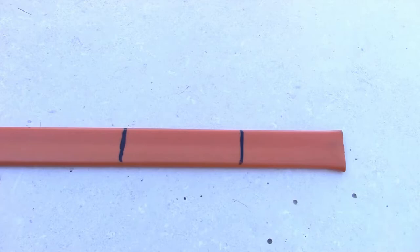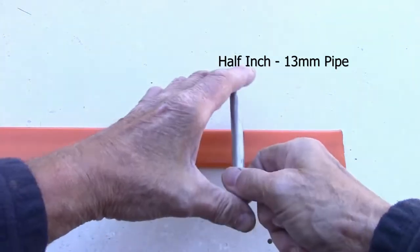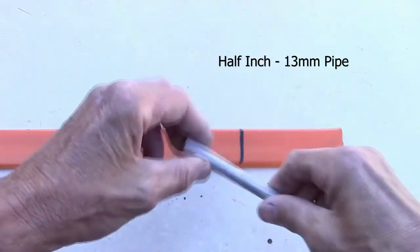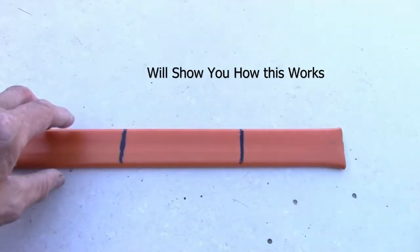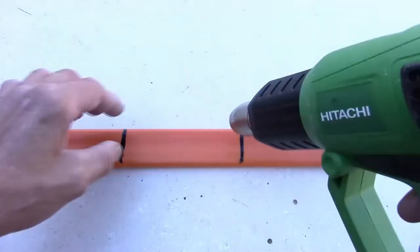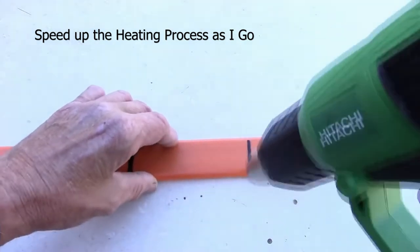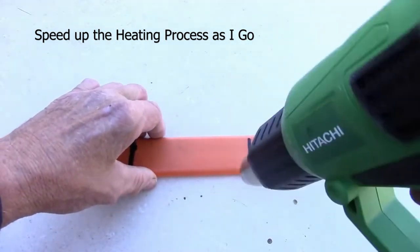So here we are. I've got a half inch aluminum pipe and that's for bending, and we'll show you how it works. Before I start heating, I'll speed up the heating process as I go.